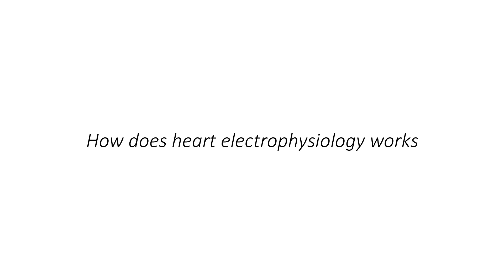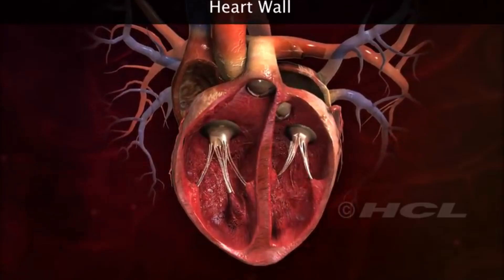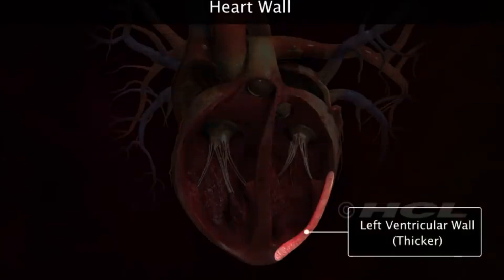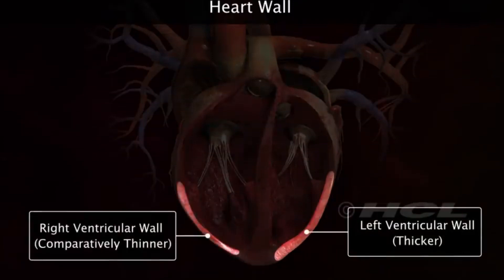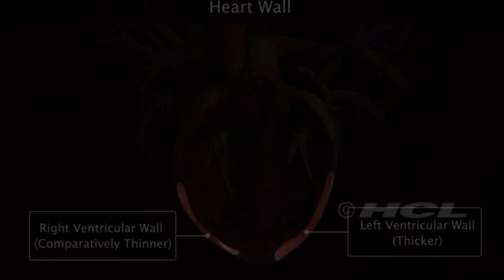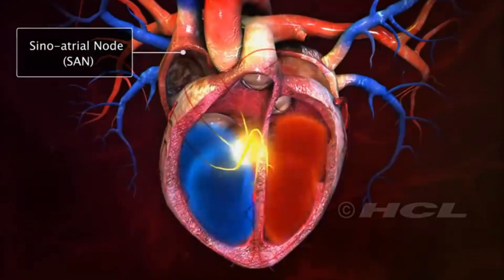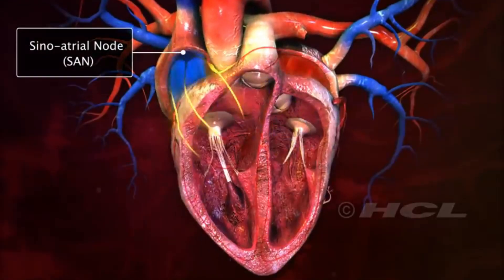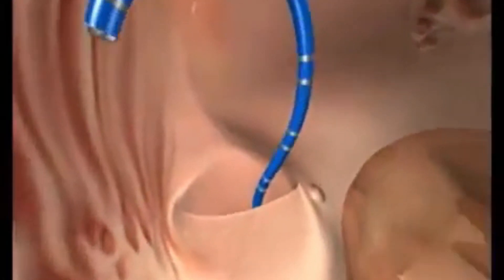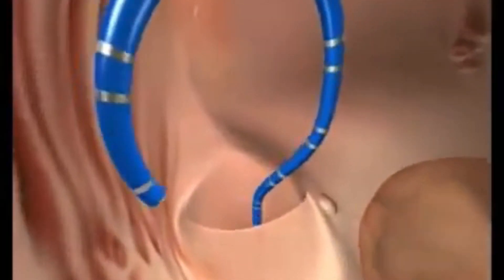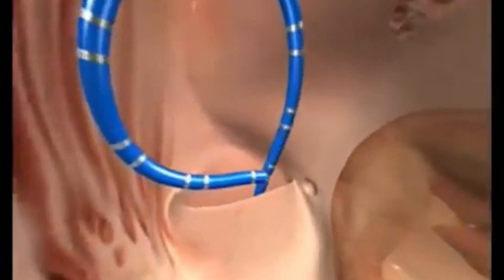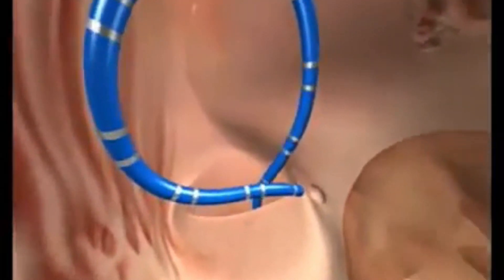An electrophysiology test is a test performed to assess your heart's electrical system or activity, and is used to diagnose abnormal heartbeats or arrhythmia. The test is performed by inserting catheters and then wire electrodes, which measure electrical activity through blood vessels that enter the heart.